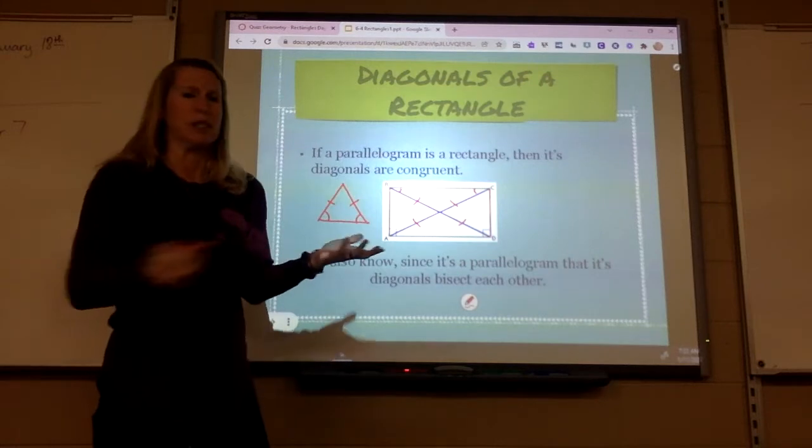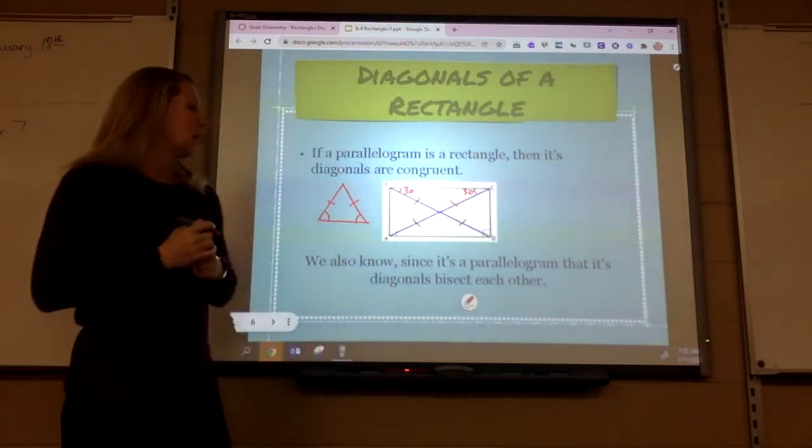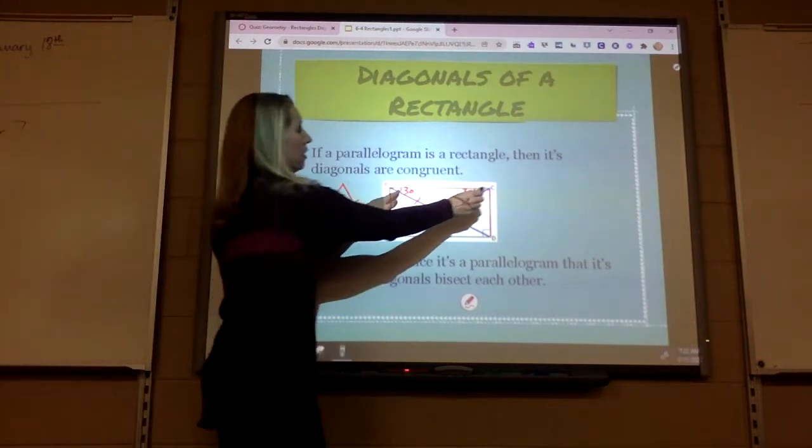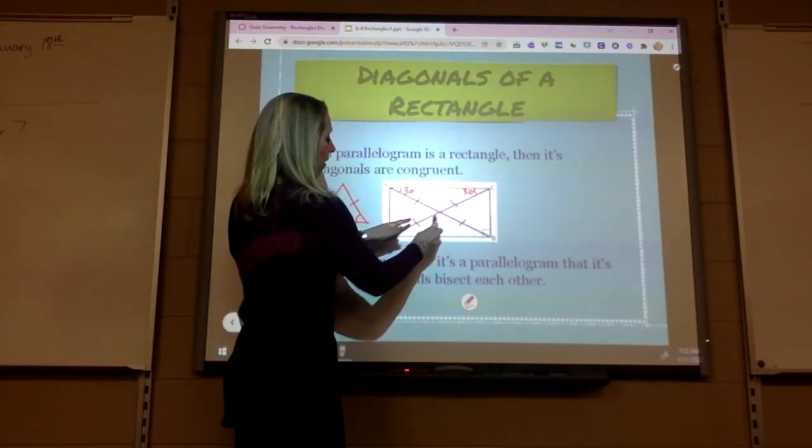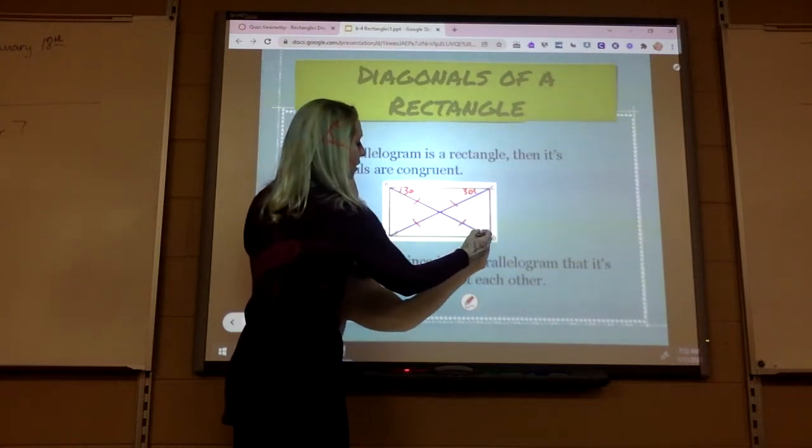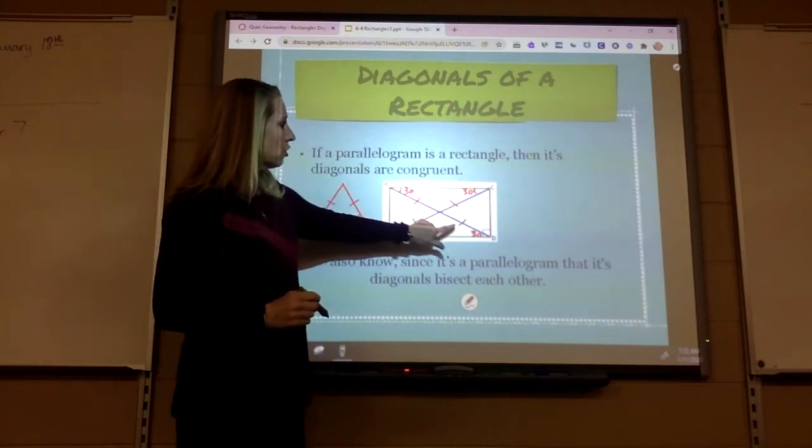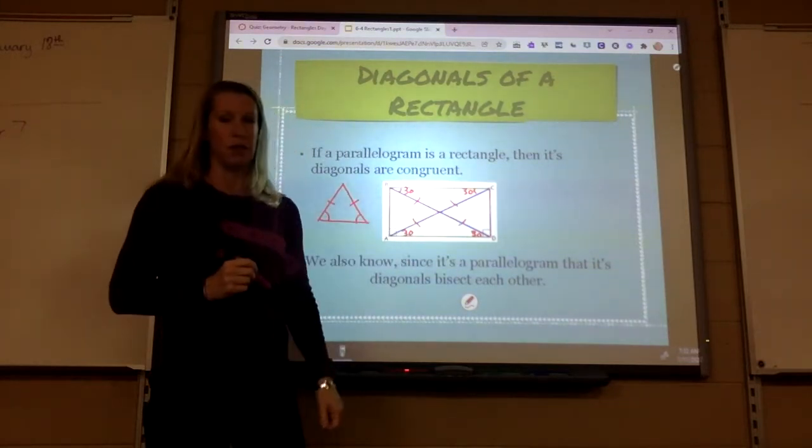So let's just pretend like these angles are 30, 30 and 30. Okay, so on a rectangle, this triangle would have to equal this triangle. So those are 30, these are 30. Unless you can think you've got your alternate interior angles and those equal each other.